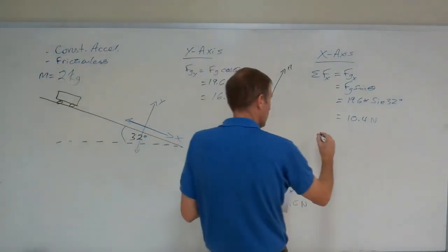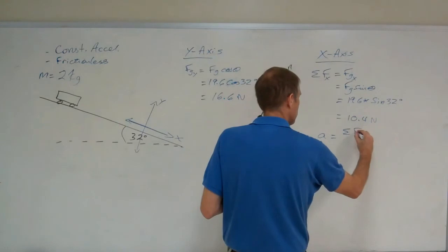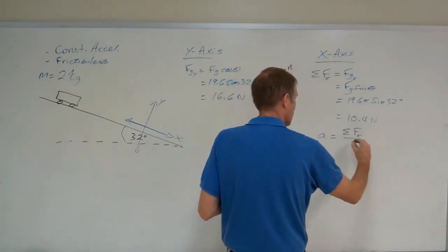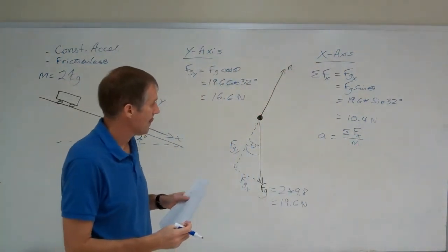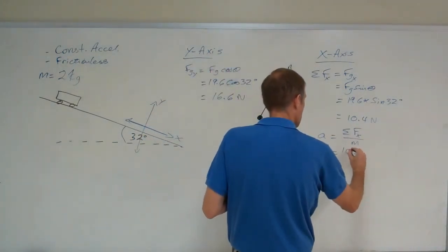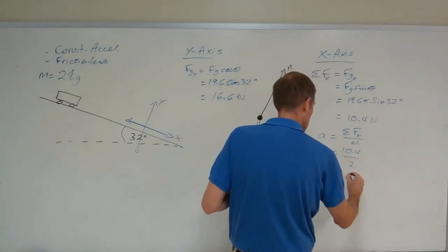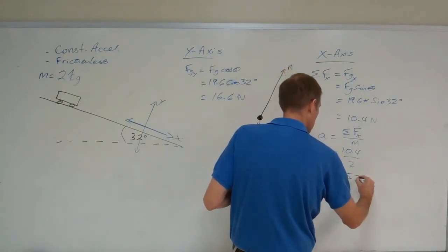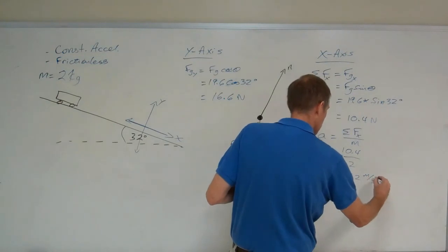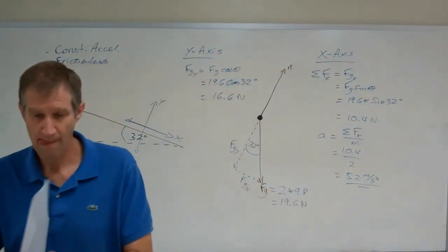So, to find the acceleration, acceleration equals net force in the X axis all over mass. That equals 10.4 over 2, which equals 5.2 meters per second squared.